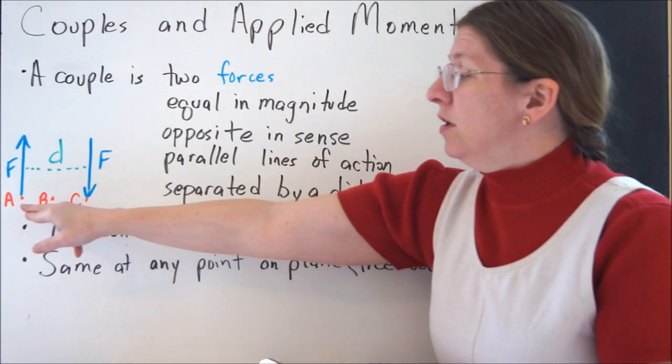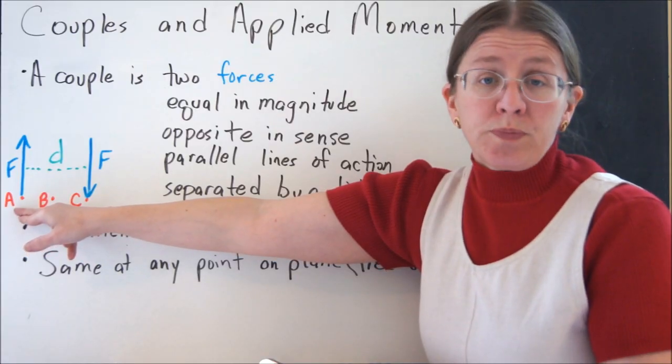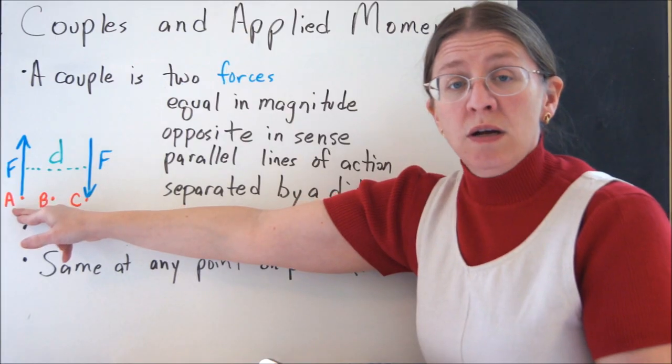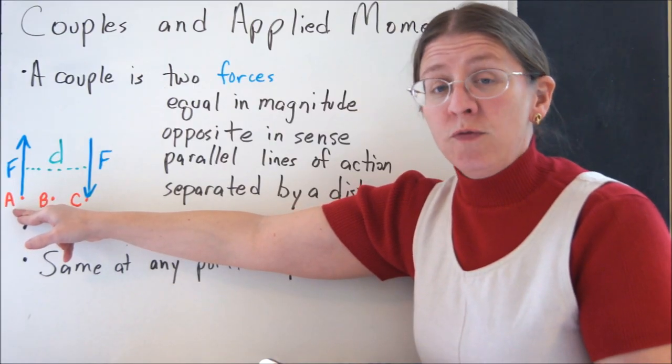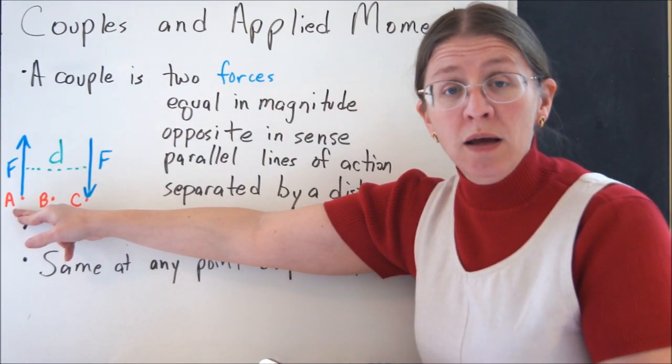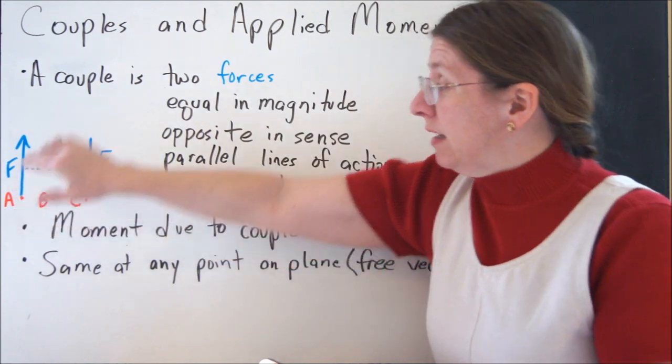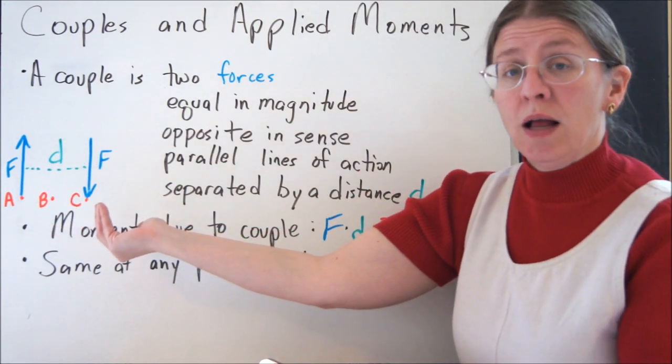And to sort of see about that, if you look at the point A here, the left force goes through A, so it doesn't create a moment at A. The right force is acting at a distance D away from point A. So you have F times D, and that moment would be going clockwise.